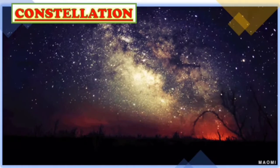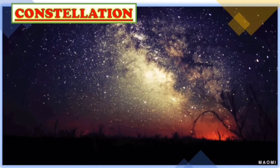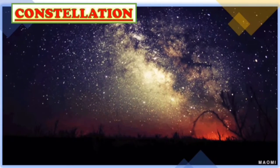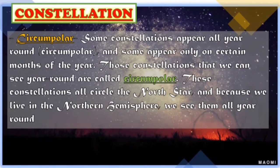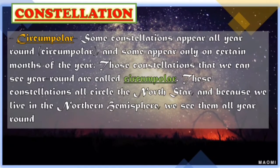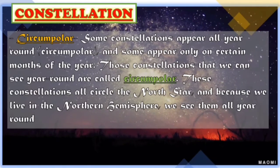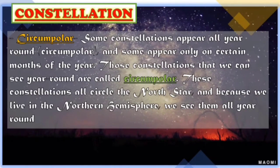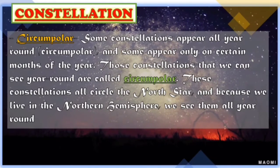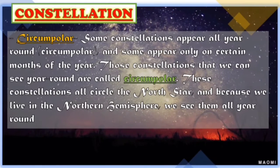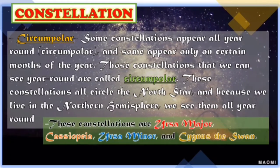Some constellations appear all year round, which are called circumpolar, and some appear only on a certain month of the year. These circumpolar constellations all circle the North Star. Because we live in the Northern Hemisphere, we see them all year round. The examples of these are Ursa Major, Cassiopeia, Ursa Minor, and Cygnus the Swan.